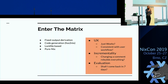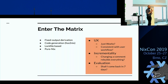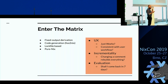We're going to articulate everything around a few axes. On the left we have: fixed output derivation, code generation, lock file-based, and pure Nix — these are the general approaches used nowadays. We're going to mix and match them with three key metrics. The first one is UX: how easy is it to use any of these approaches? Does it just work? Because if you want to build and package something, you want it to just work — you don't want to debug it or figure out new flags.